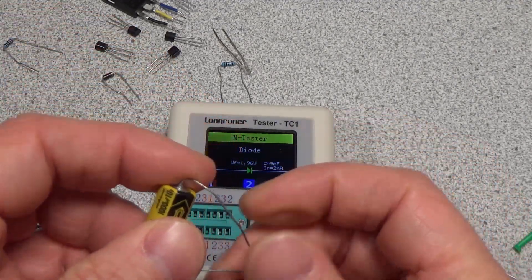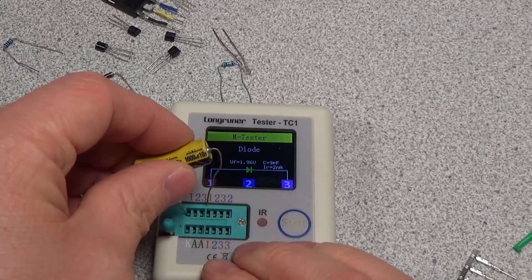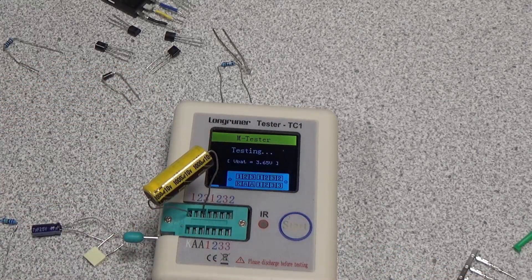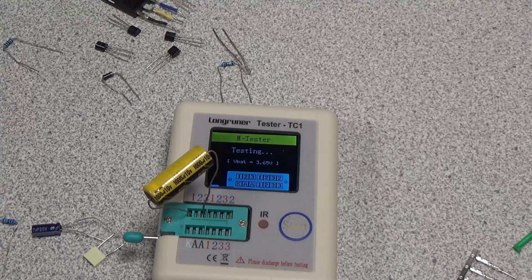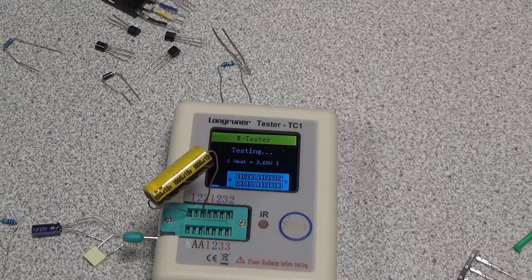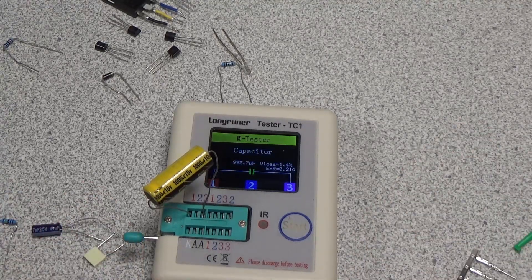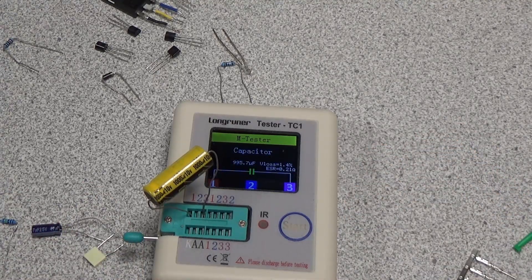This is a big capacitor. We'll see how this one does. This might confuse it. This is a 1000 microfarad, 10 volt capacitor, Nichicon of course. And there it is, 1000 farads, has an ESR of 0.21 ohms. Nothing wrong with that at all. That's good.